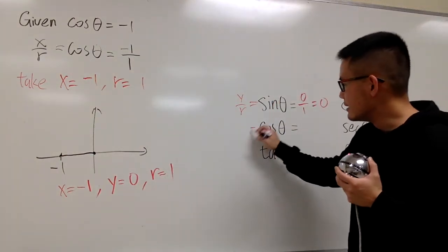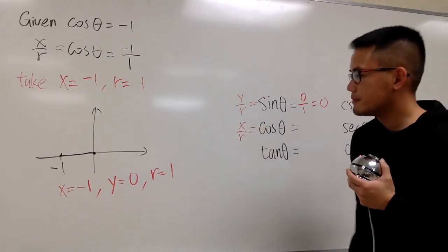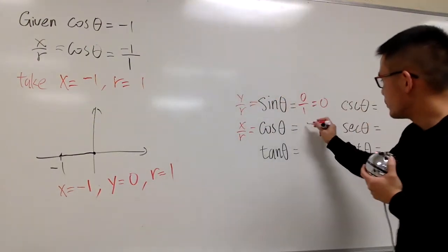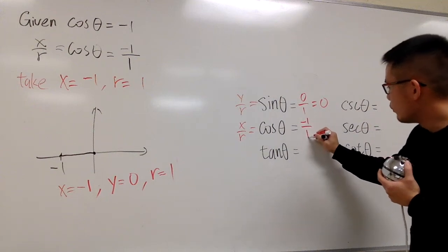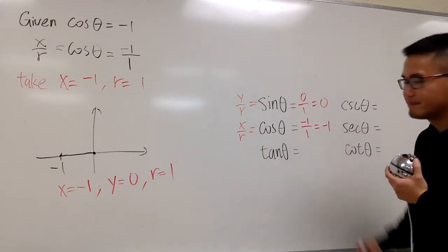Cosine theta, this is x over r, negative 1 over 1. So let me put this down. Negative 1 over 1, which is negative 1.